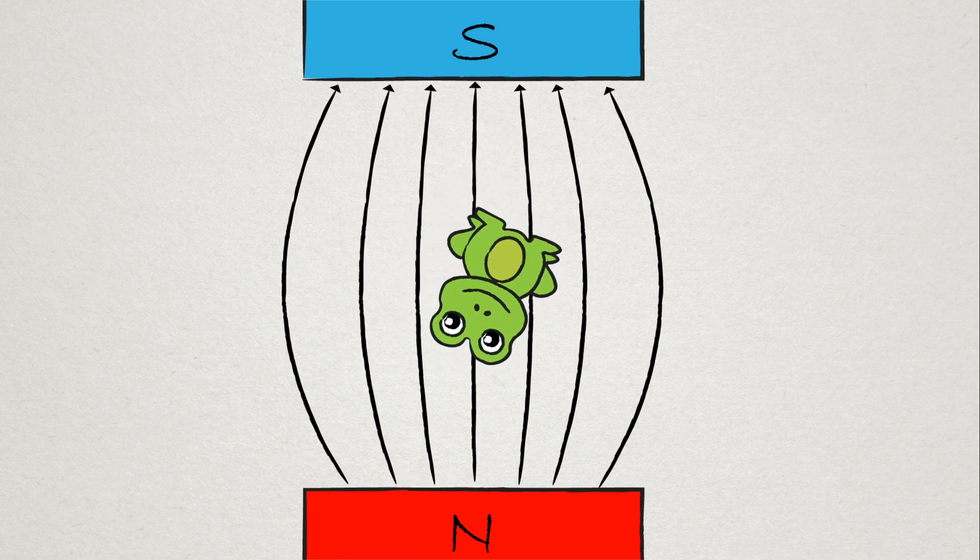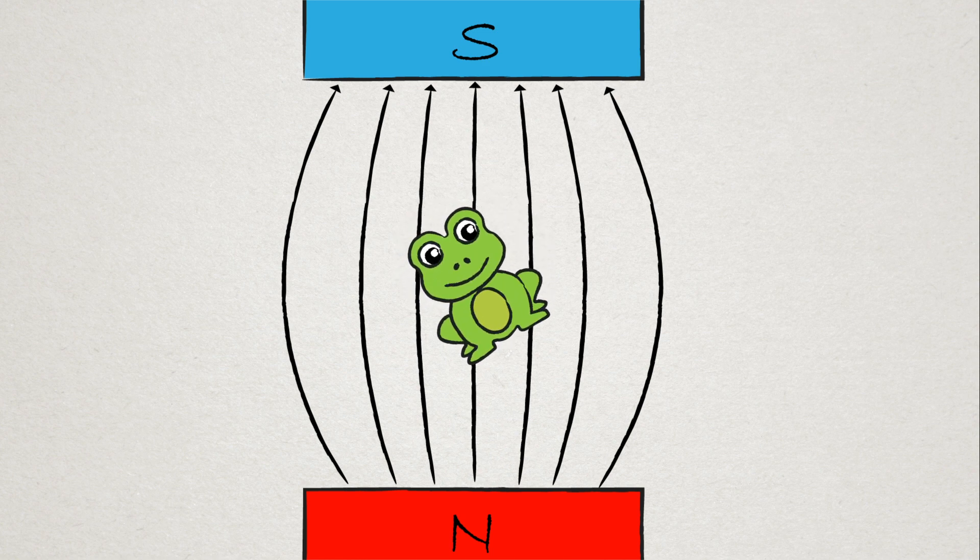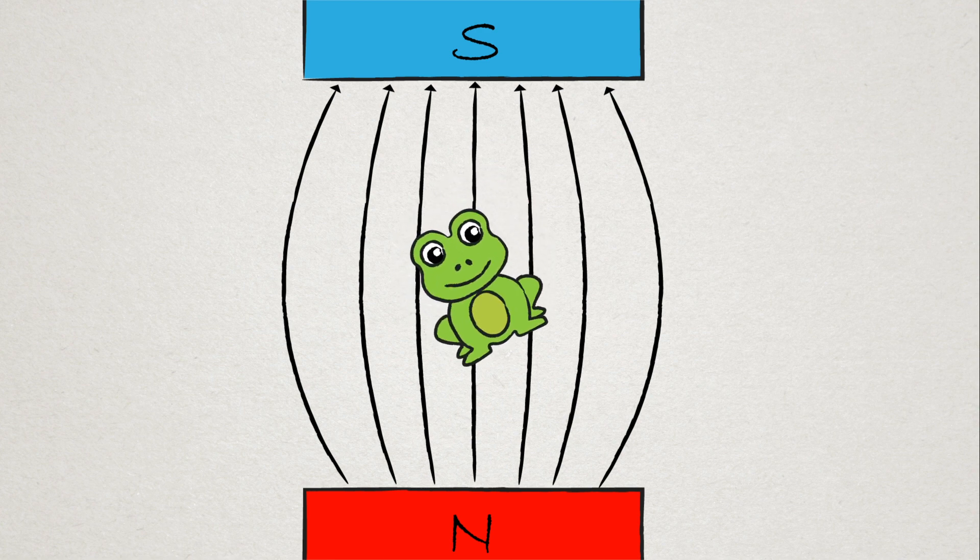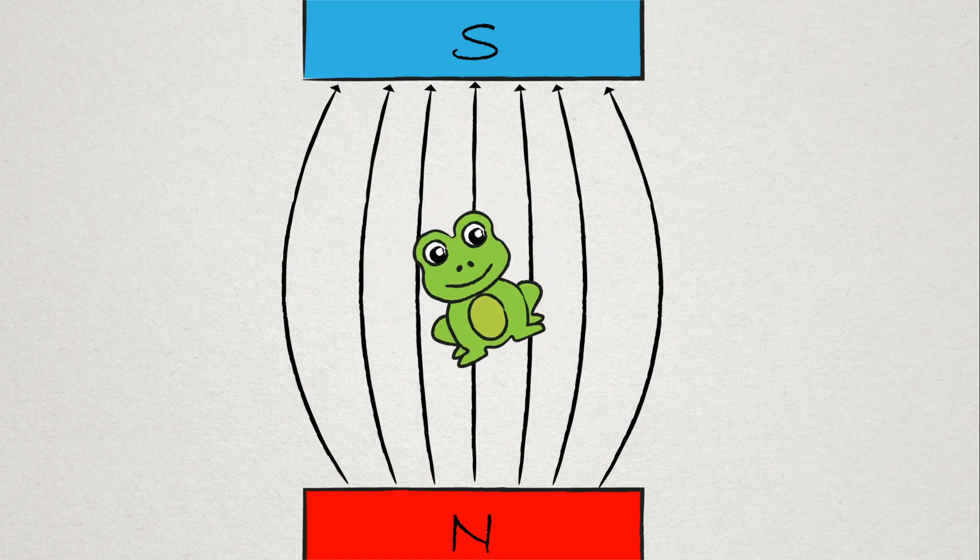Scientists have in fact demonstrated this by magnetically levitating certain animals. Both frogs and mice have been magnetically levitated in extremely large magnetic fields. The scientists that have done this won the Ig Nobel Prize.